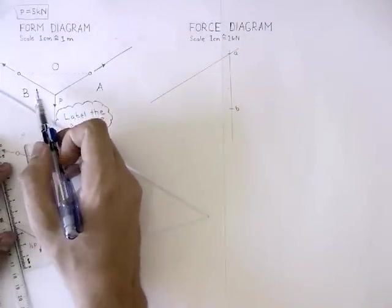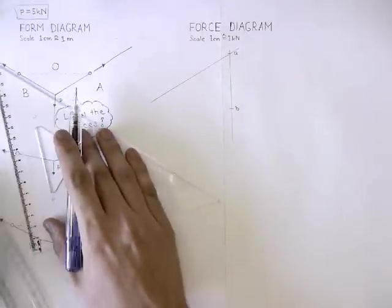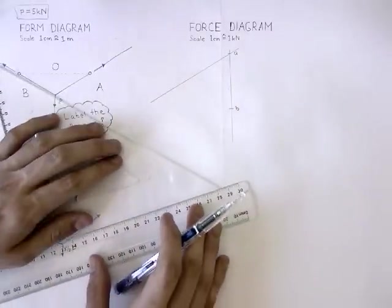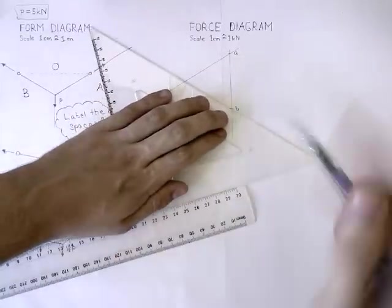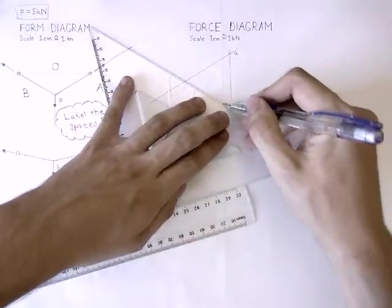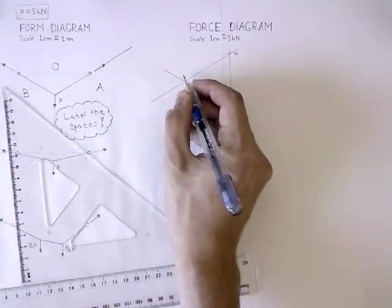This line runs between the spaces B and O. So in the force diagram, it is going to be running between the points B and O. Somewhere on this line is point O, and where these two lines meet is point O.